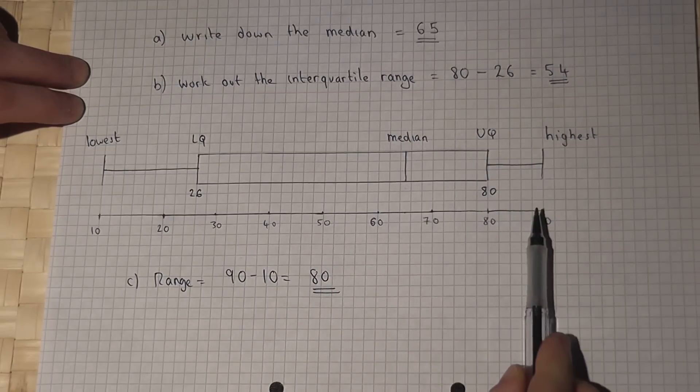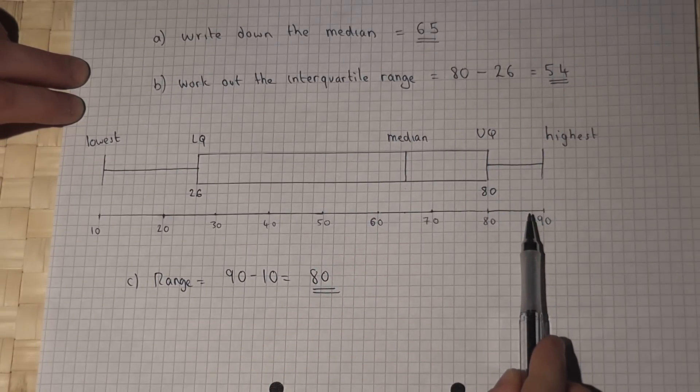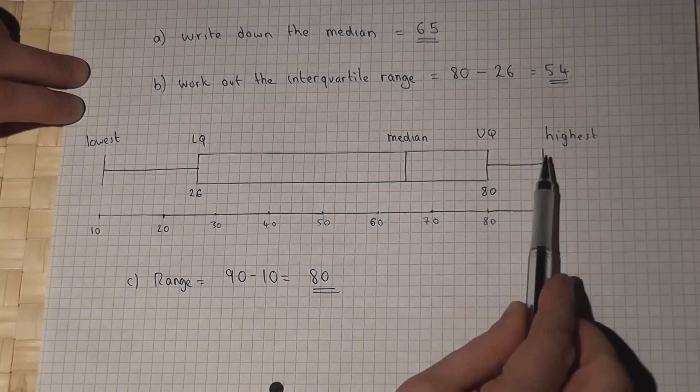So again, a box and whisker plot is a very simple graph which shows you quickly key points from that particular data set.